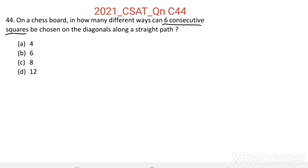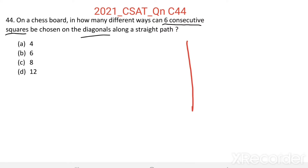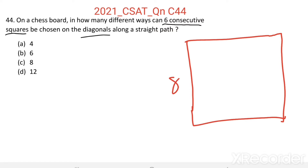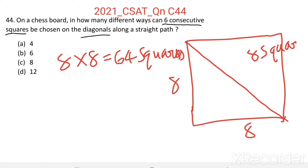On a chess board there are 64 squares. Along one diagonal there are eight squares that we can represent.